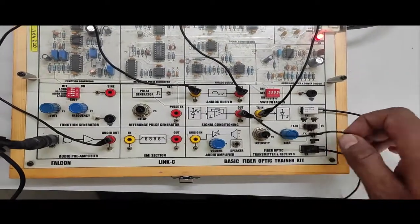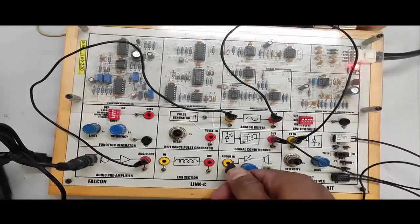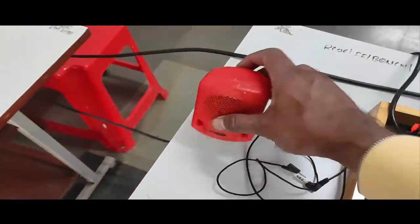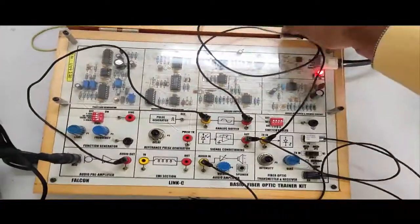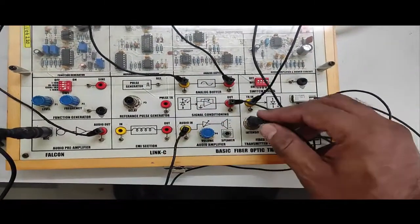The output of the signal reconditioning or signal conditioning block will be given to the audio amplifier again because we need to hear the original voice which we transmitted and we can connect speaker as the output device on this kit.